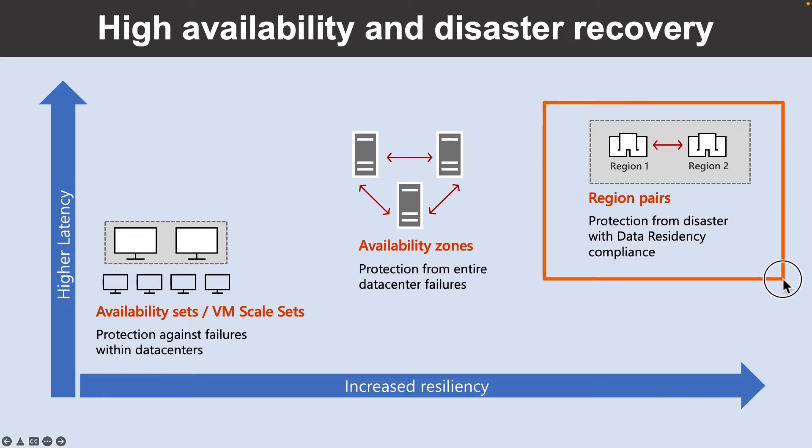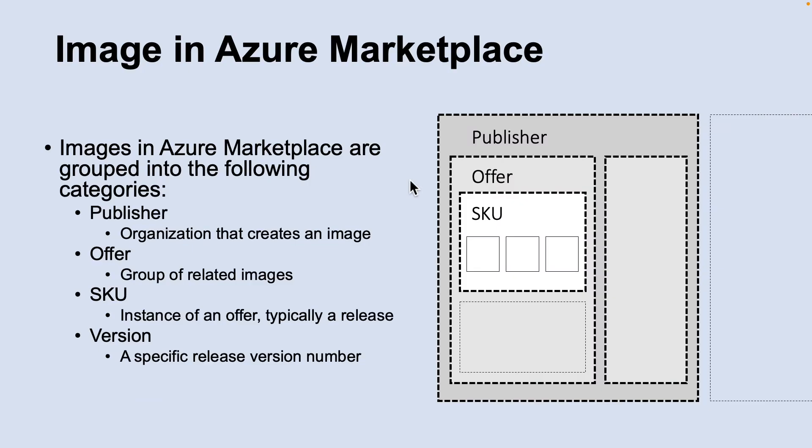The next topic is region pairs. Each Azure region is paired with another region within the same geography, together making a region pair. This approach allows for replication of resources such as VM storage across a geography, and should reduce the likelihood of natural disasters, civil unrest, power outages, or physical network outages affecting availability.